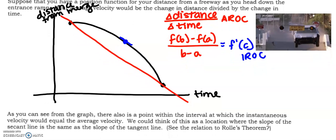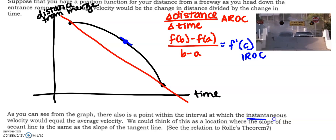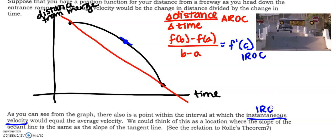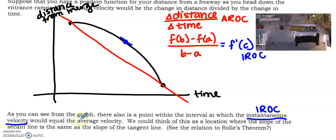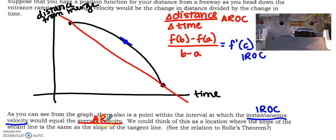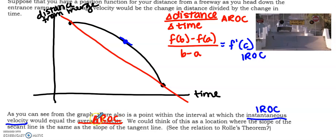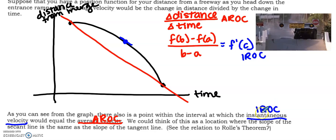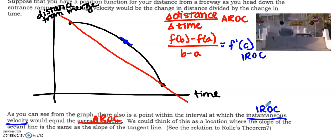So IROC will be equal to AROC. Okay, so if we look up here, there's also a place in the interval, which is the instantaneous rate of change, right? Instantaneous velocity, that's IROC, will be equal to the average rate of change, the average velocity, which is AROC. So old school slope, slope of the secant, will be equal to new school slope, slope of the tangent, okay?